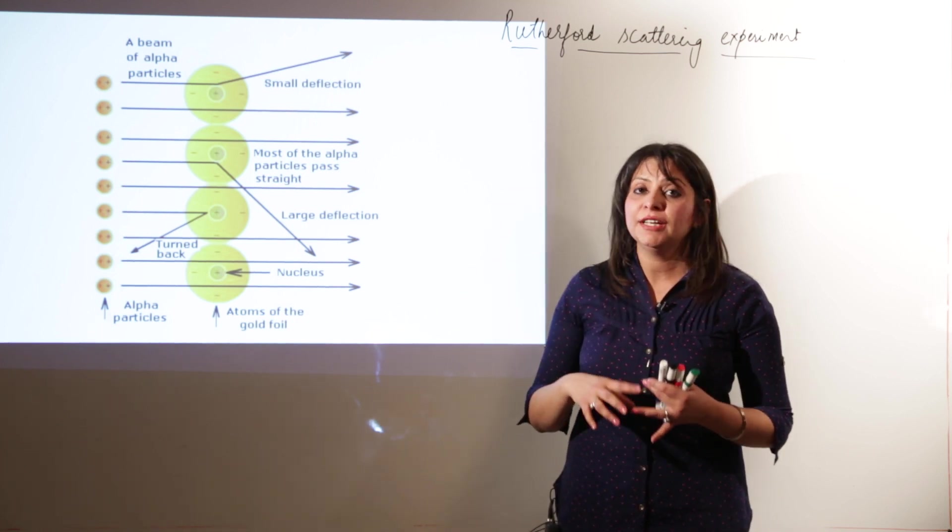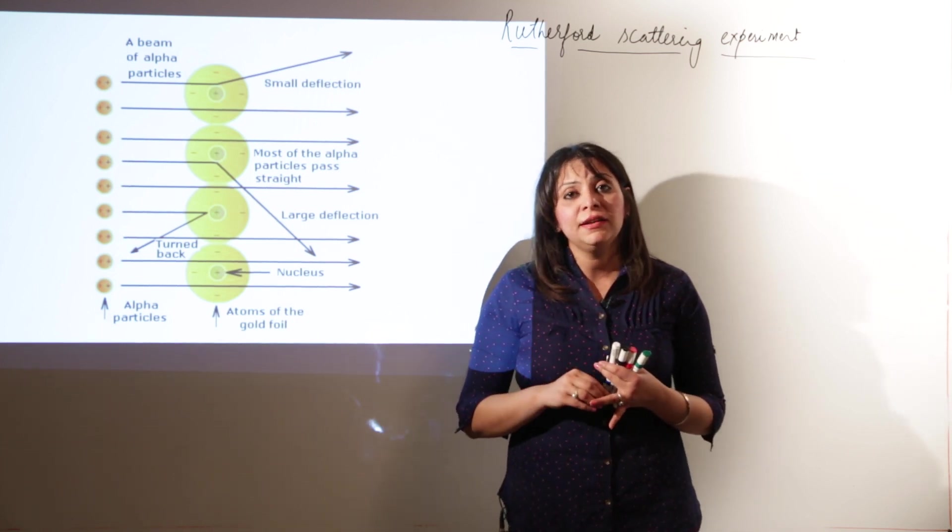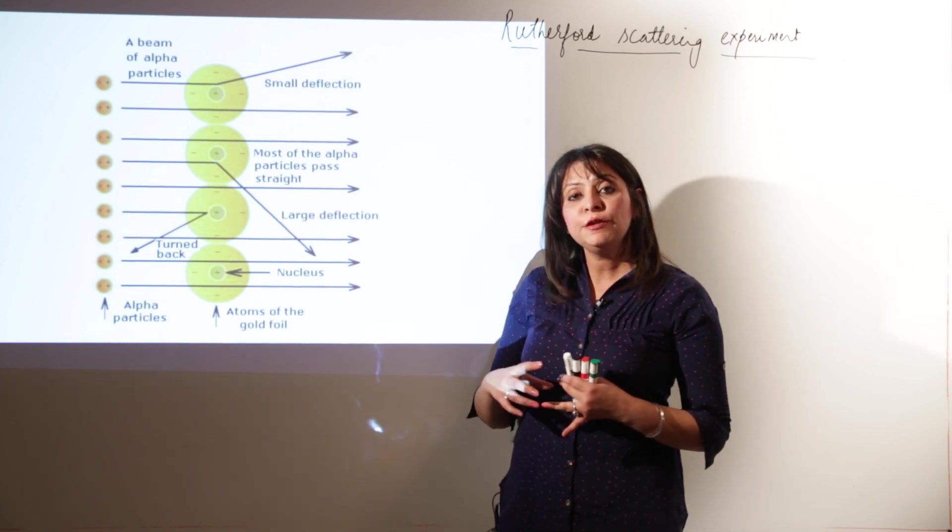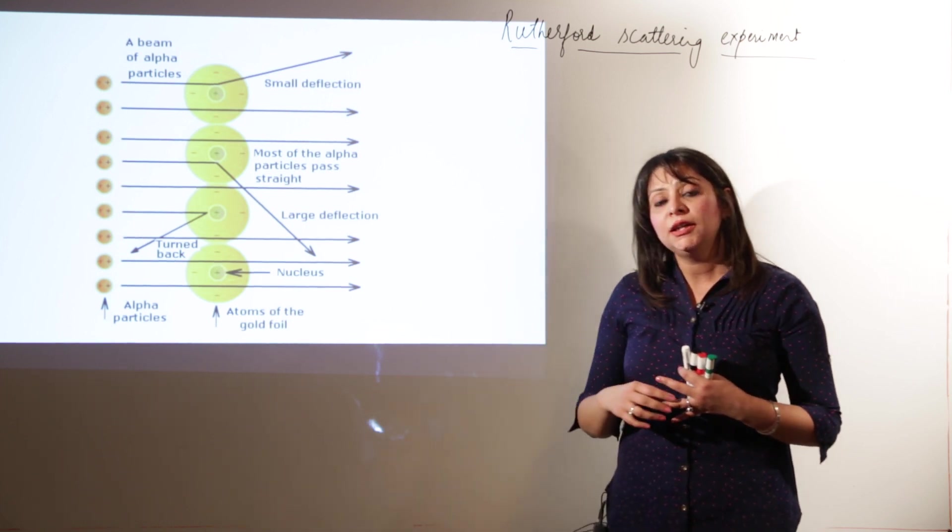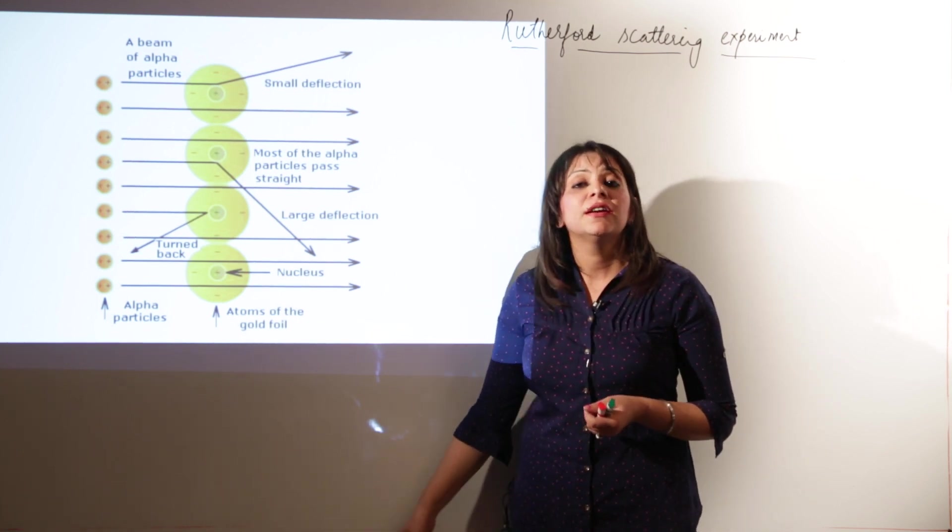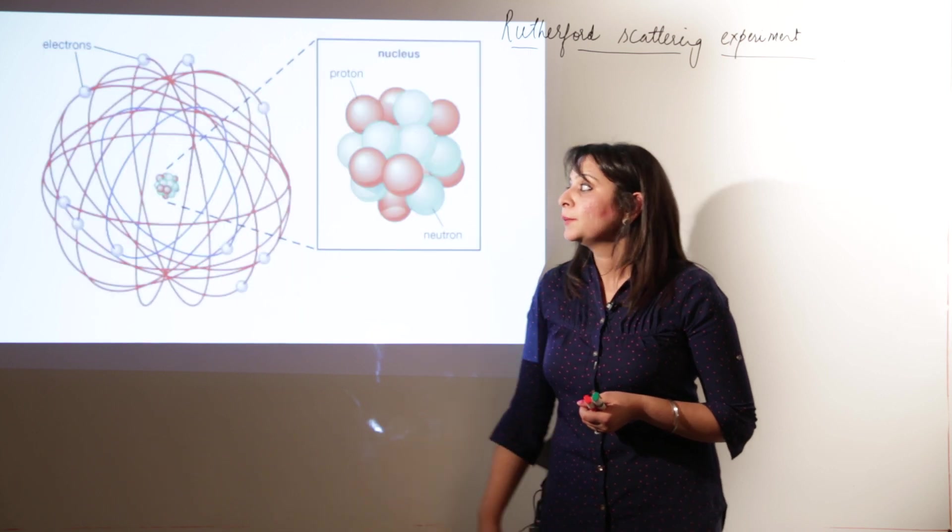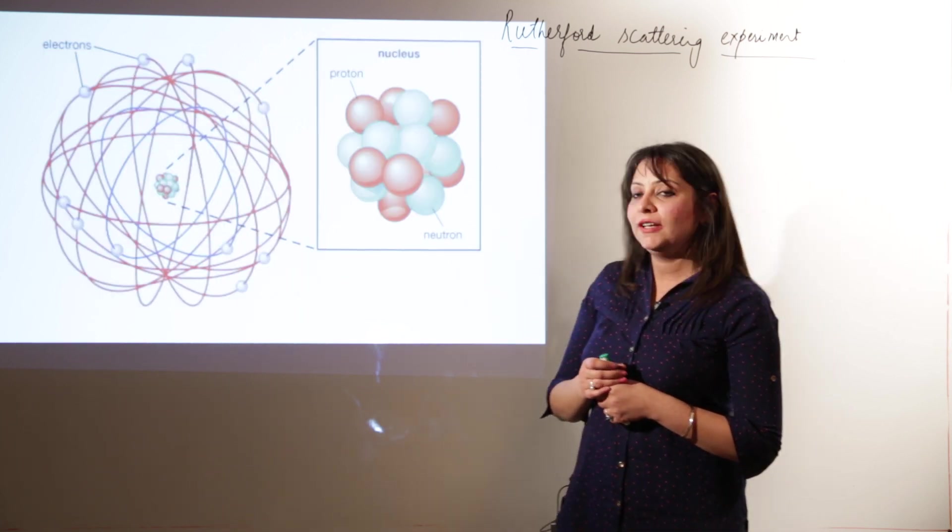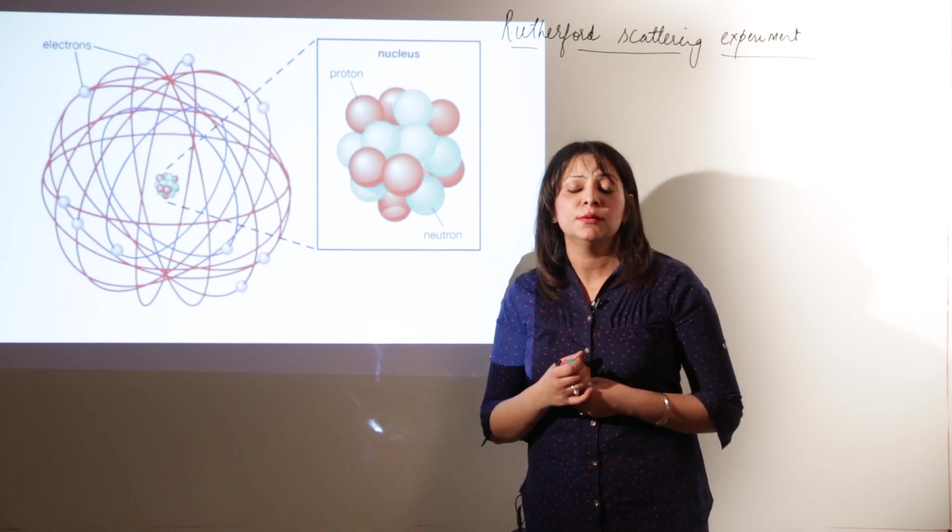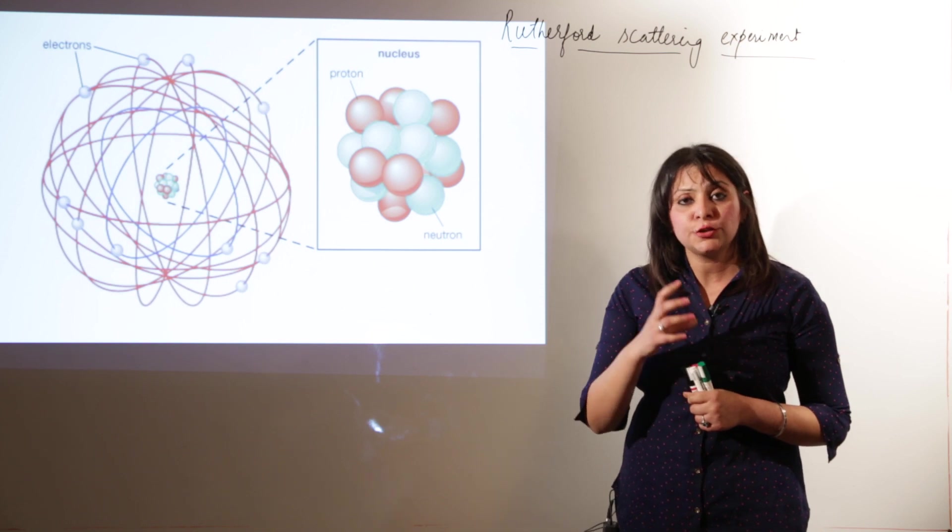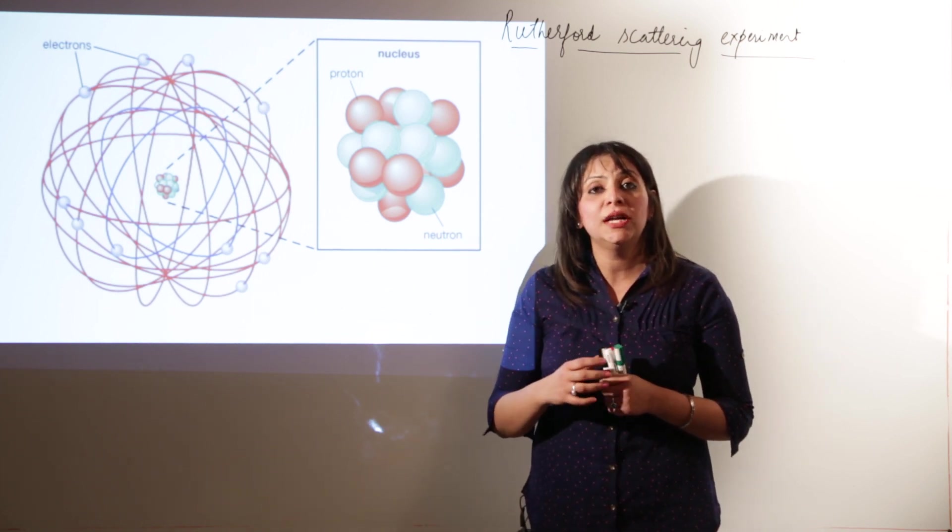This whole observation and conclusion made it possible for Rutherford to give a model based on his experiment. So he gave the Rutherford model. According to him, the Rutherford model resembles the solar system. According to him, the structure of atom resembles the solar system.